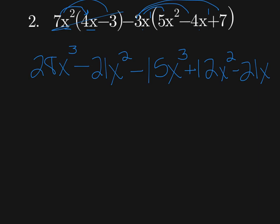Now we're going to combine like terms. So I have an x to the third. You always start with your highest exponent and work your way down. So my highest exponent is to the third power, so I'm going to make 28x to the third and a negative 15x to the third. So 28 minus 15 is 13, and remember the variable does not change when you're adding or subtracting.